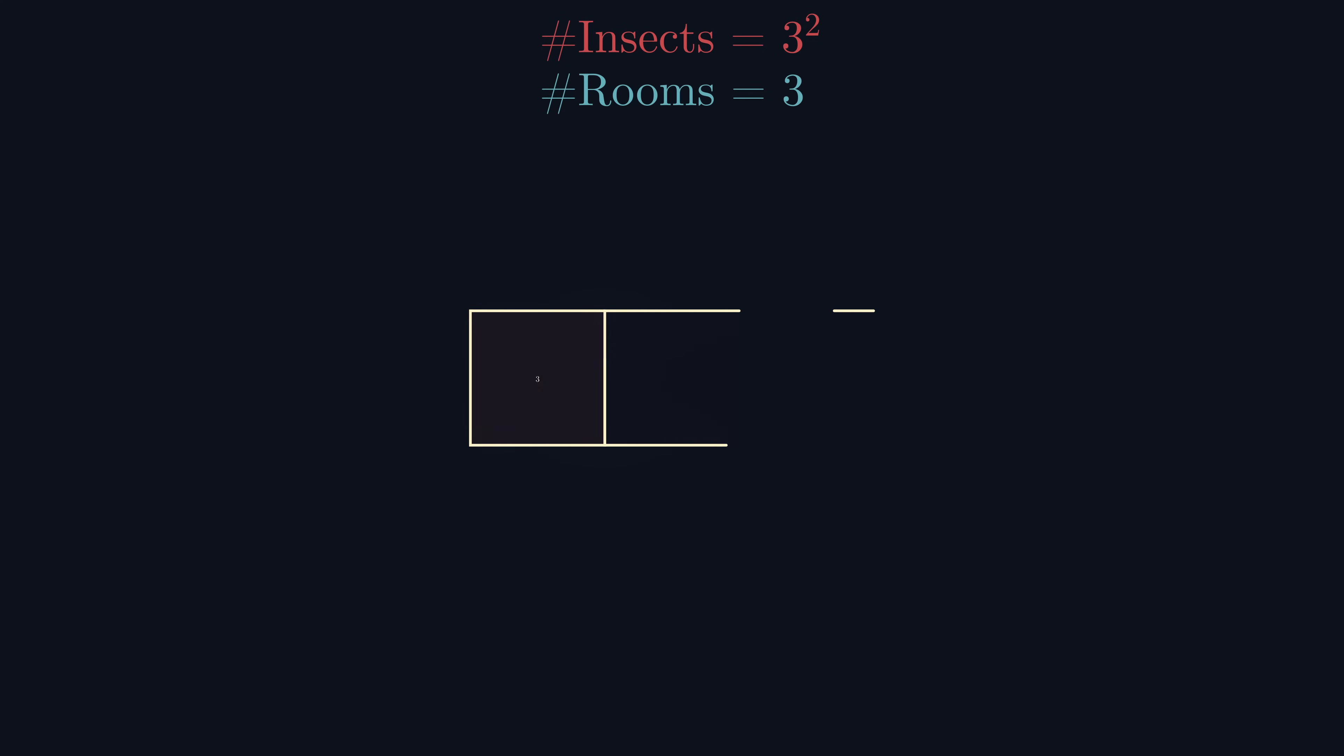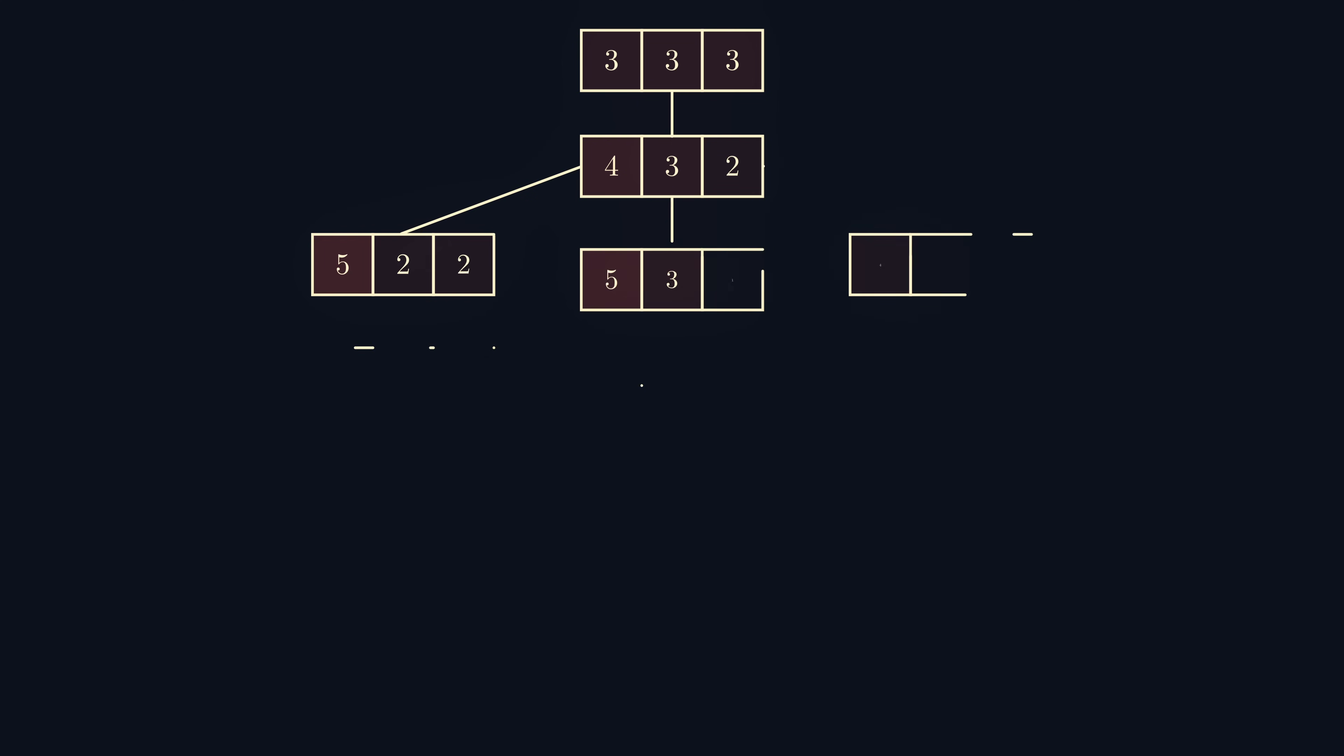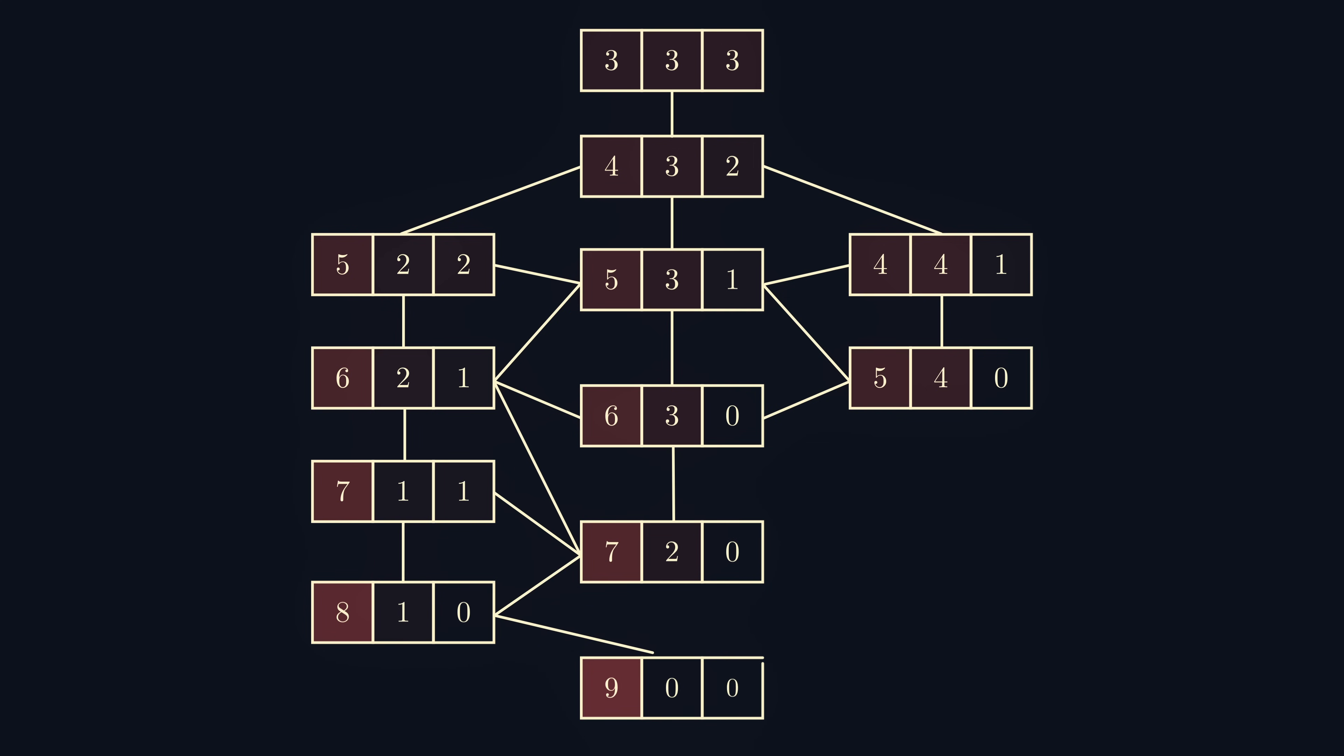If we start with three insects in each room, then after one second we will have four, three, and two insects in each room in some order. We can keep going like this, but notice that as soon as a room contains zero insects,